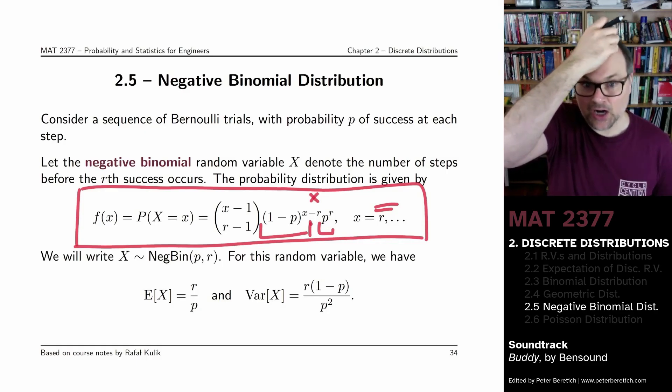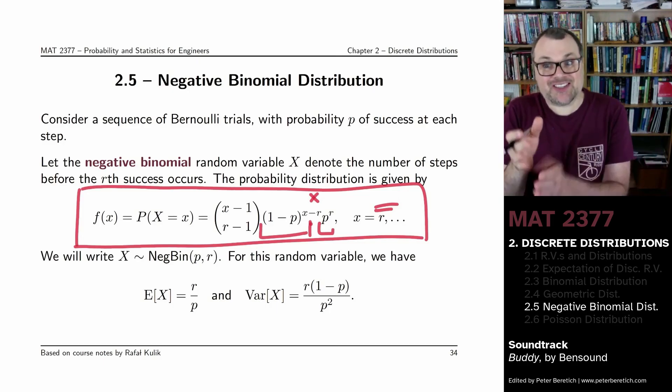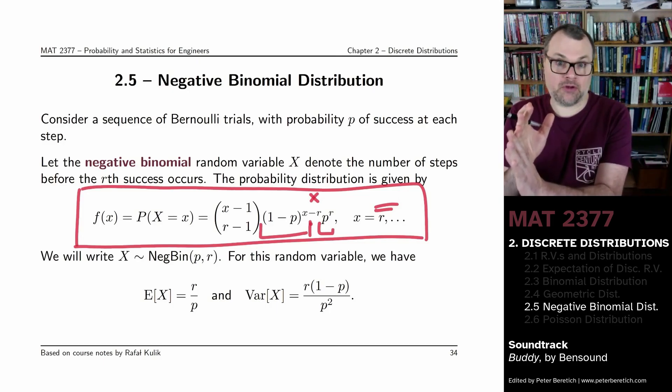The probability of having R successes in exactly X throws requires you to have a success on the last throw, on the Xth throw.